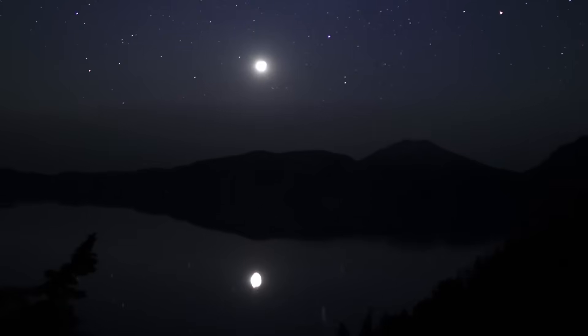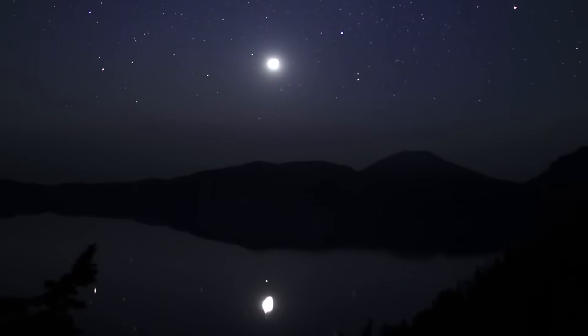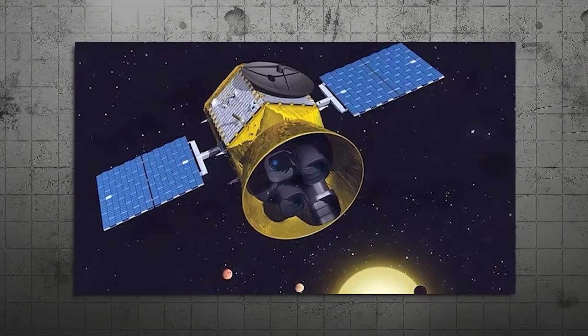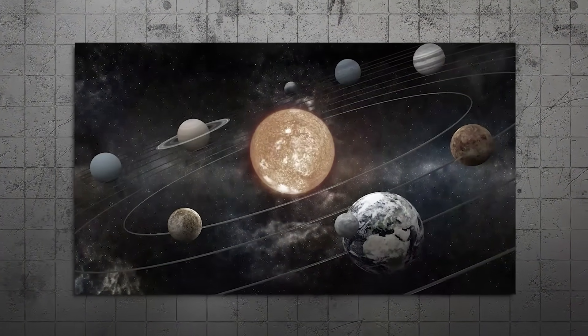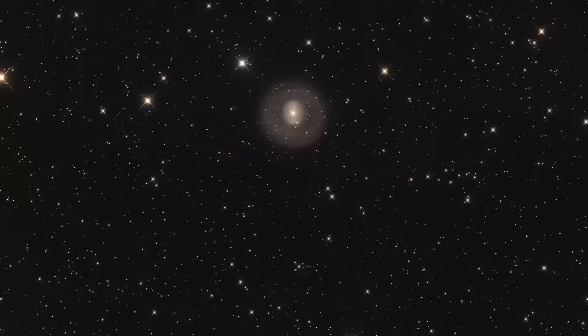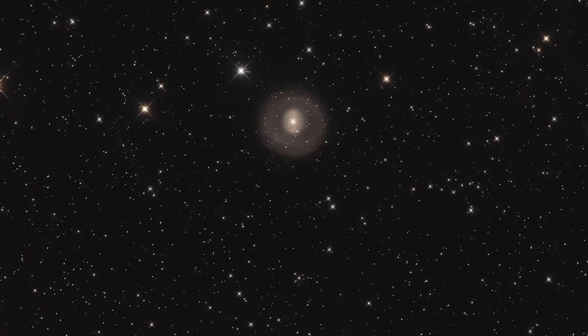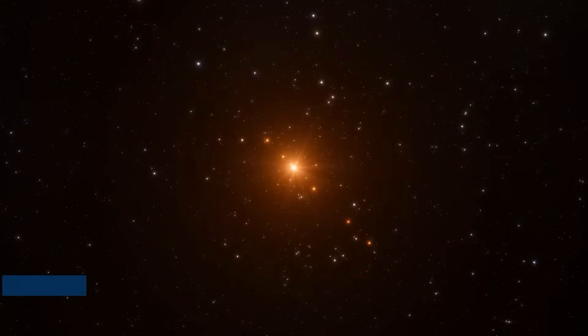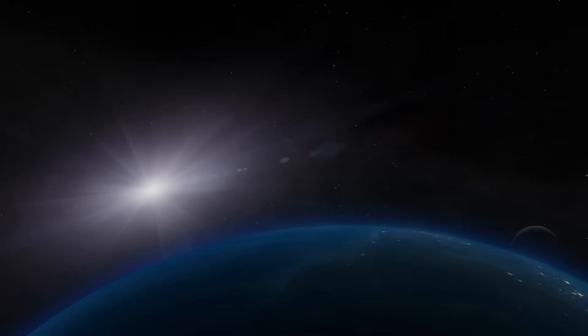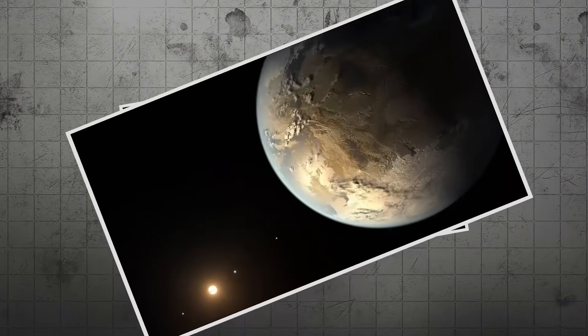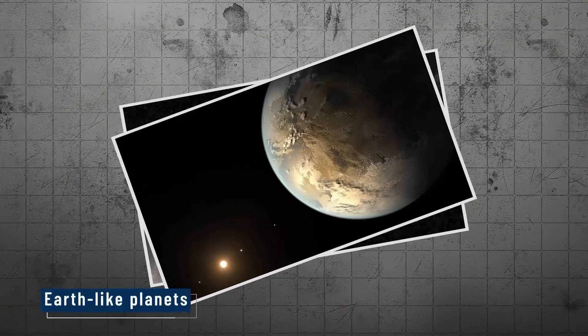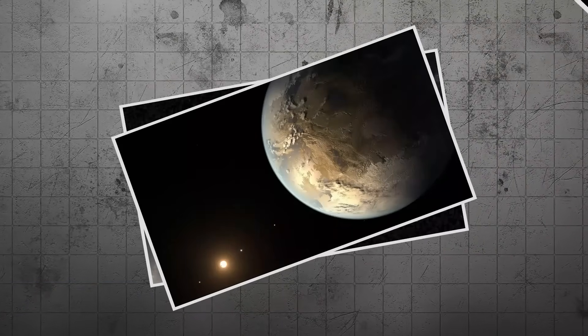These moons could have subsurface oceans, protected by thick ice and warmed by the gas giant's gravity. This discovery also helps scientists think beyond the solar system. If planets can form in these distant orbits and stay stable for millions of years, then life-friendly environments may be more common than we thought. This is where Proxima b comes into the picture. A rocky world orbiting the closest star to our own. While TWA-7b is too far to host life, the same imaging tools could soon capture Earth-like planets near stars like Proxima Centauri.